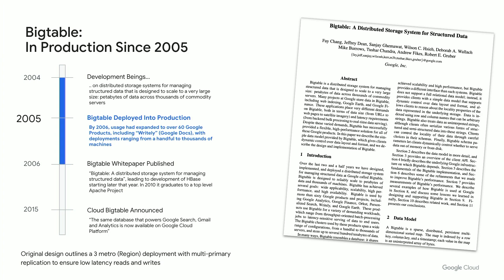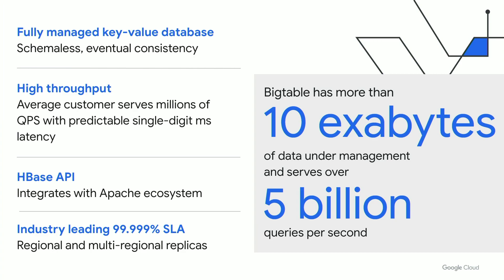Google developed Bigtable in 2004 to handle both the scale and precision accuracy needed. It was released to production in 2005 and the paper came out a year later. The same Bigtable made available to cloud customers in 2015 is behind several billion-user consumer services you may use today — search, analytics, maps, and Gmail. Bigtable continues to grow and has more than 10 exabytes of data under management and serves over 5 billion queries per second. It's a fully managed key value database, and average cloud customers coming from on-prem or other clouds are achieving stable performance with millisecond latencies and millions of queries per second.